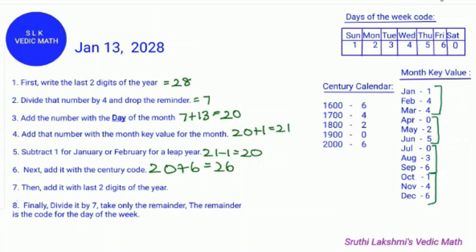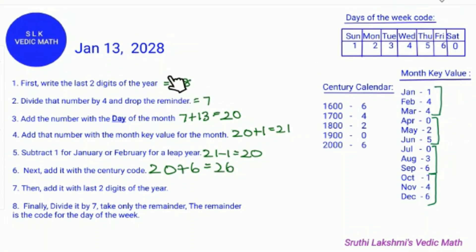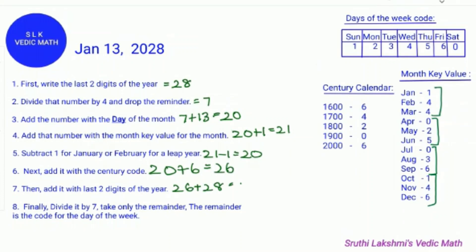Next, it says to add it with the last two digits of the year. The last two digits are 28. So we do 26 plus 28, which equals 54.